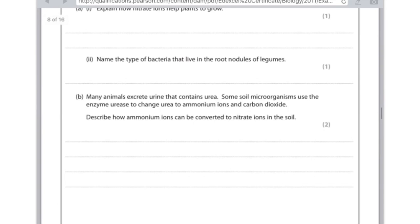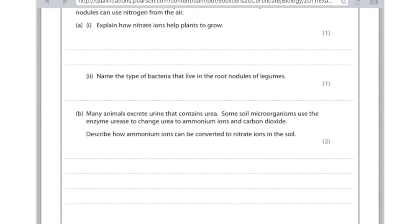So that's two marks. So you need to name the type of bacteria which does that conversion. And it's the nitrifying bacteria. And remember what they do is they convert nitrite to nitrate. So they are looking for specific answers there.